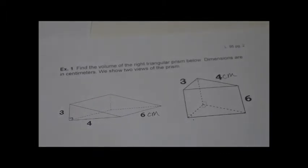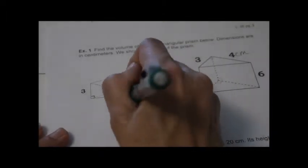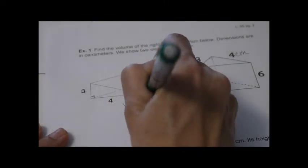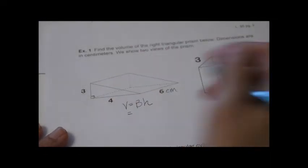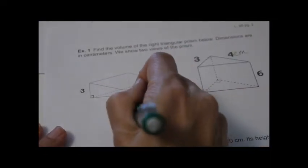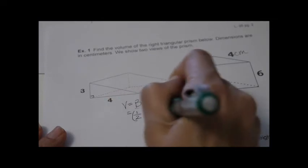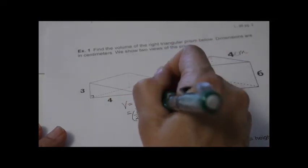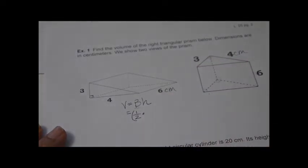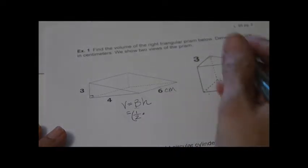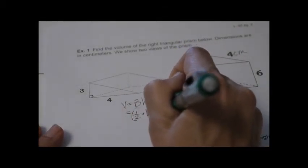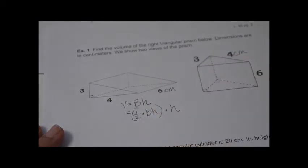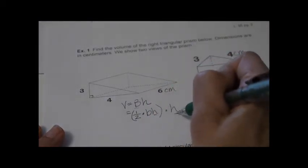Let's use our formula. We always write the formula first: volume equals area of the base times the height. Since we have a triangle, we're going to change that big B into one-half base times height — in parentheses so we don't get confused with the height of the actual prism. So it's one-half base times height, then times the height of the prism. These H's are two different dimensions.